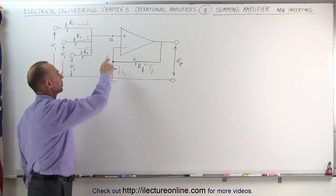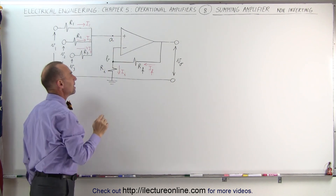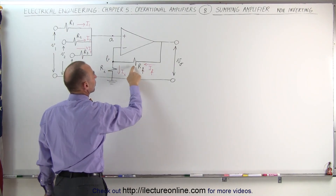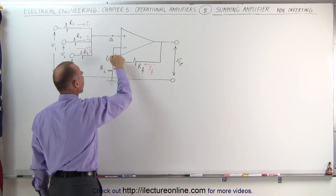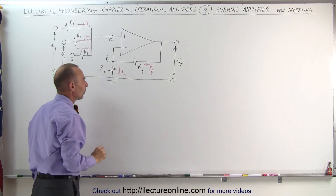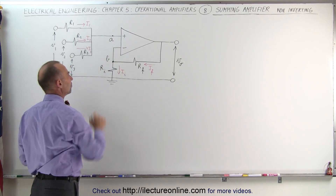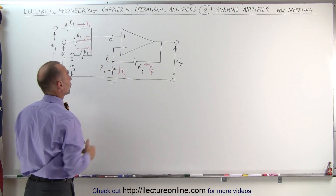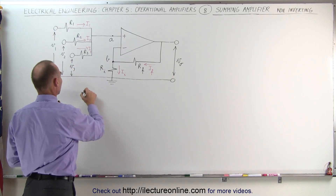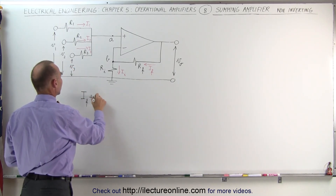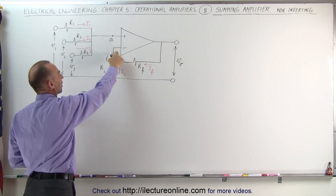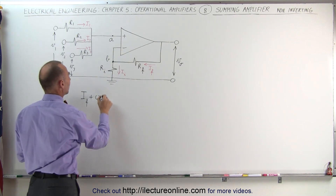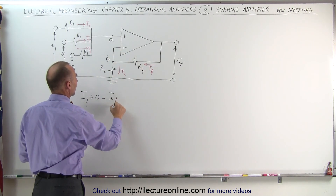We have two connections here: a connection at A and a connection at B. We have current running from the output to B through the feedback resistor, and then we have the current running from B to ground. Let's go ahead and work at junction B first. The sum of the currents entering junction B must equal the sum of the currents leaving junction B, which means that I sub F plus zero — zero being the current from the ideal amplifier input, which is nearly zero — must equal the current leaving the junction, which is I sub F.